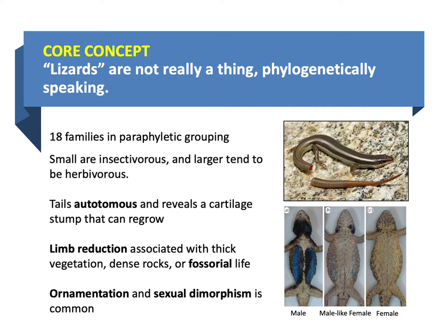The whole process of tail regrowth has always fascinated biologists, especially biomedically — how do stem cells in that cartilaginous plate know to become new tail tissue, nervous tissue, blood vessel tissue? That gets a lot of people interested in whether we can engineer limb regrowth.